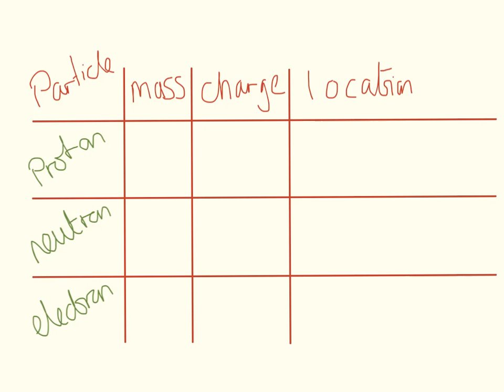So this is what you need to know about the particles. You need to know their mass, you need to know their charge, and you need to know their location. So let's start with the location since we just did that one. Protons are in the nucleus of an atom, as are neutrons, and electrons are in what we call shells around the outside.